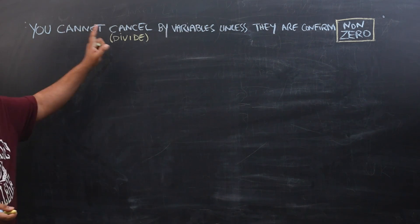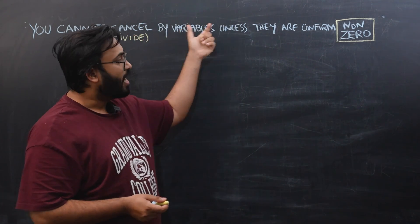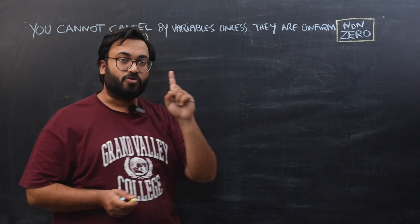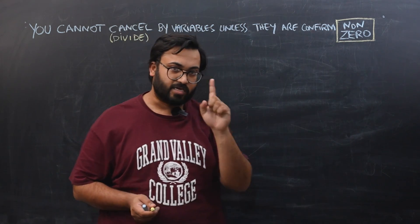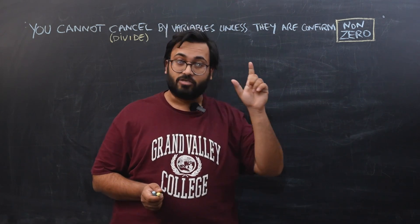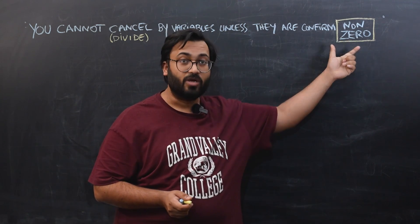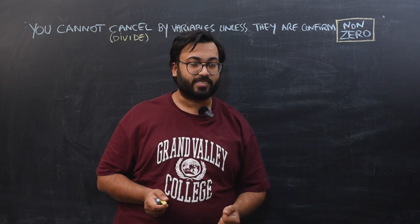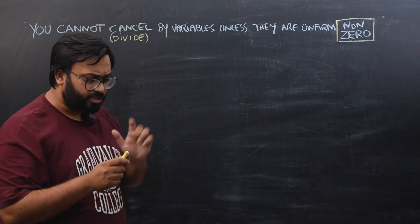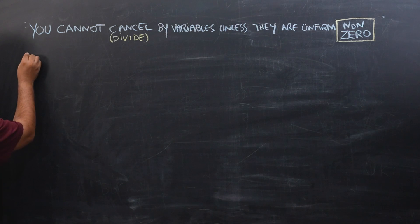You cannot cancel or divide by a variable term unless you are confirmed that it is a non-zero term. We can only cancel with terms which we are sure are non-zero. If we are not sure that they are non-zero, we cannot cancel with them. Let me explain that with a lot of examples in this video — it will get clearer as we go along.